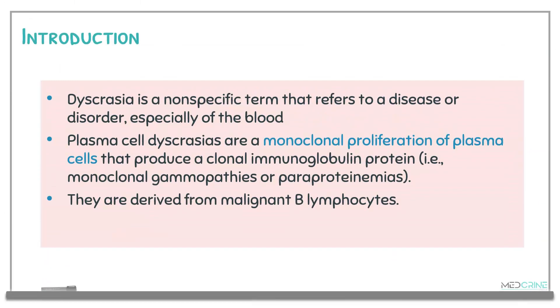To start with, let's define what a dyscrasia and a plasma cell dyscrasia are. A dyscrasia is a term that refers to a disease or disorder, and in most cases a disorder of blood origin. A plasma cell dyscrasia is a monoclonal proliferation of a plasma cell that produces a clonal immunoglobulin protein.